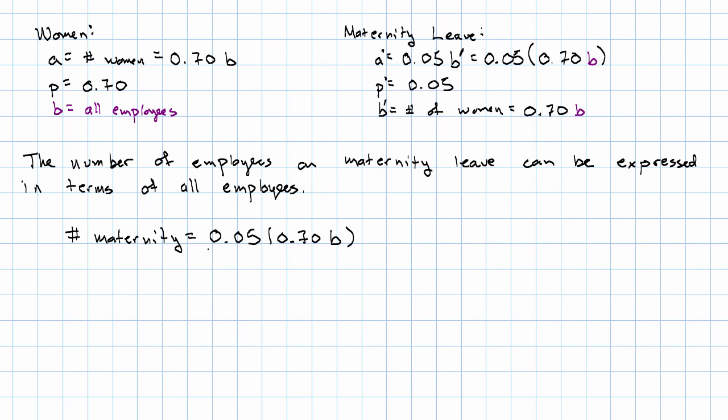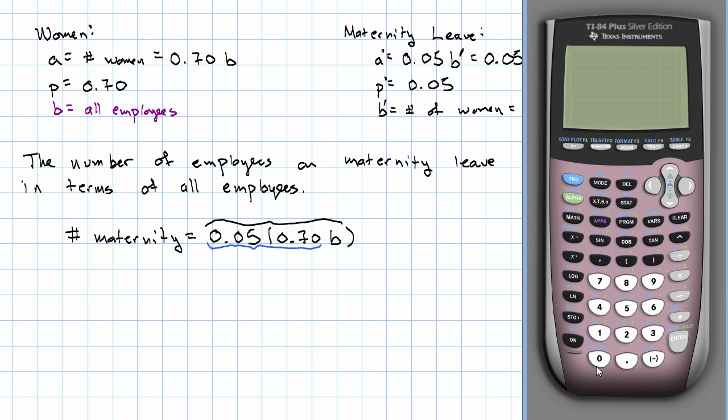But now we can simplify this expression. Multiplication is associative, so we can do this multiplication first. We'll say 0.05 times 0.70. We find 0.035B.